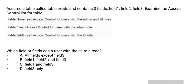Option A: All fields except Field 3. Option B: Field 1, Field 2, and Field 3. Option C: Field 1 and Field 3. Option D: Field 3 only.